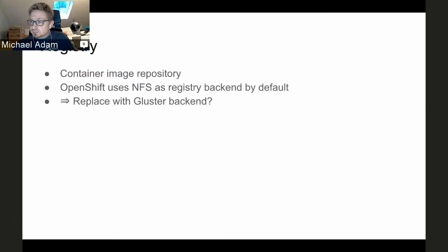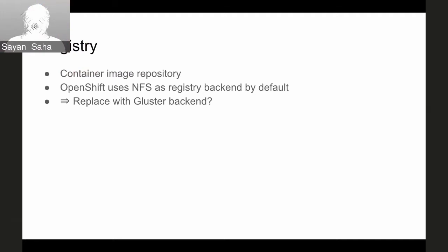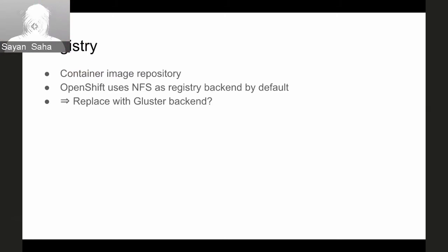Regarding whether OpenShift infrastructure components like logging and metrics count as applications: the answer is yes. We're chipping away at the problem one by one. OpenShift infrastructure — including the registry, metrics with Cassandra and Hawkular, and logging with Elasticsearch — all need storage too. We'll do the registry first, then look at Cassandra and Elasticsearch in a future release. Both Cassandra and Elasticsearch recommend local SSD storage for low latency, but we're making improvements in GlusterFS to support those workloads too.